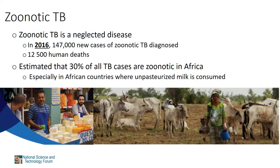Zoonotic tuberculosis is a form of TB in people predominantly caused by Mycobacterium bovis, which belongs to the Mycobacterium tuberculosis complex. The implications of zoonotic TB go beyond human health. The organism is host-adapted to cattle, where it is referred to as bovine TB, and it also causes TB in other animals including various wildlife species. Bovine TB has an important economic impact and threatens livelihoods. In 2016, 147,000 new cases of zoonotic TB were diagnosed and 12,500 human deaths were reported.